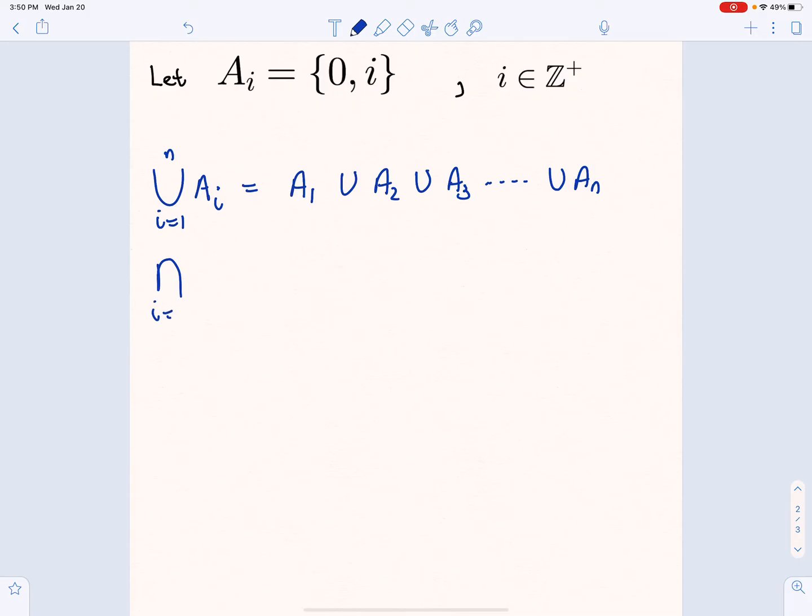We also have the generalized intersection of sets. So they're defined by subscripts. We have A₁ intersect A₂ intersect A₃ intersect all the way up to Aₙ. So it's the intersection of all of those sets.